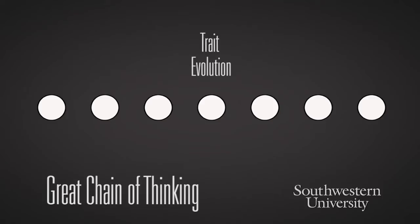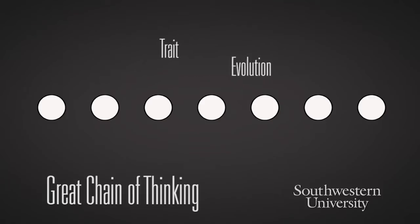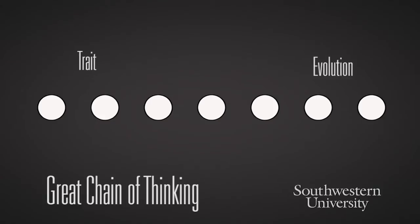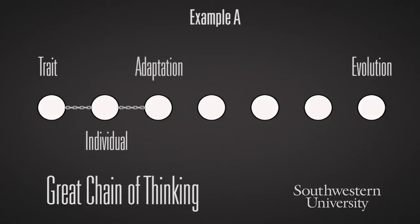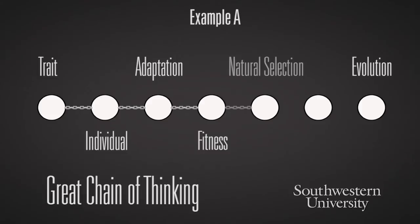Let's look at the first option. Let's put trait in the first circle and evolution at the end. Individuals have traits, so we can connect trait to individual. We know that individuals also have adaptations — that would be the next circle. Adaptations confer fitness. Fitness leads to natural selection. Natural selection is an idea of Darwin. And Darwin is famous for evolution. Hence, that provides a great chain of thinking.